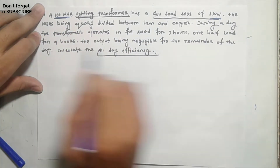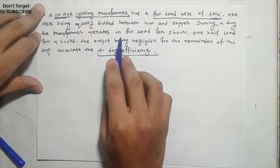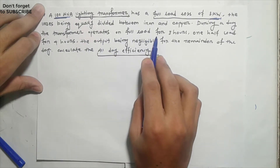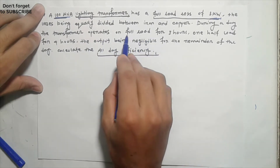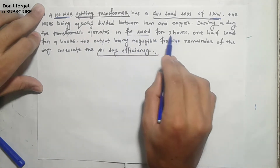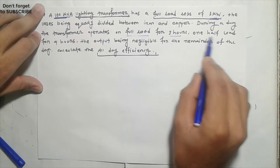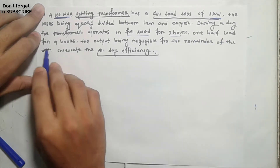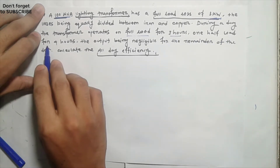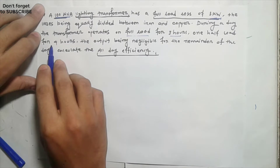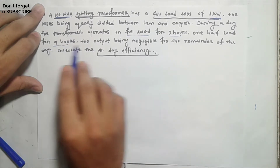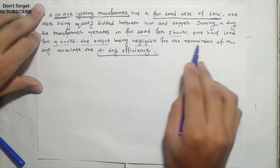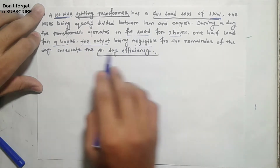During a day, the transformer operates on full load for 3 hours, equal to 3kW output. Then at half load for 4 hours, equal to 4kW output. The output is negligible for the remainder of the day.